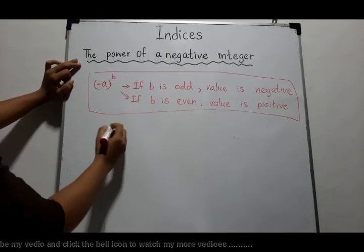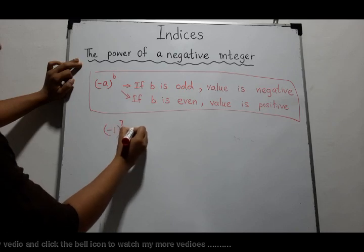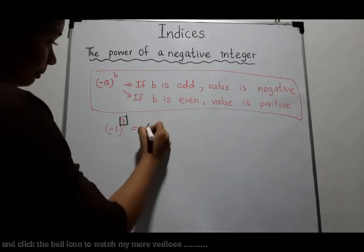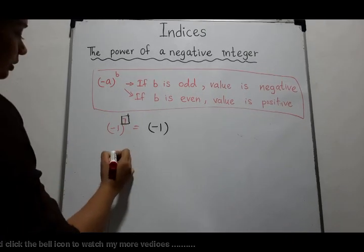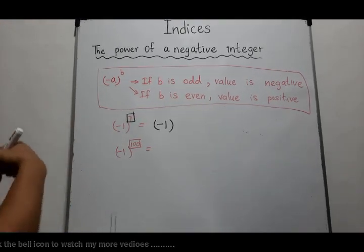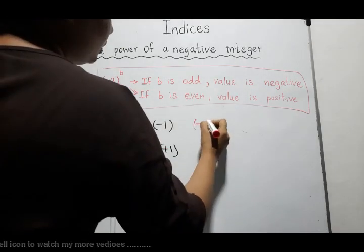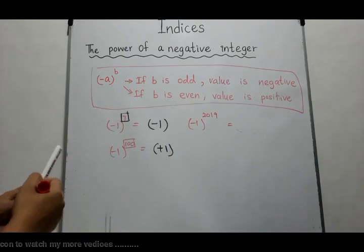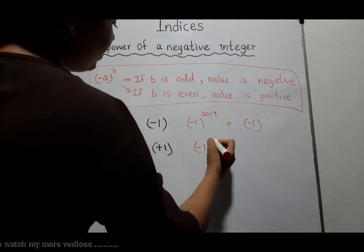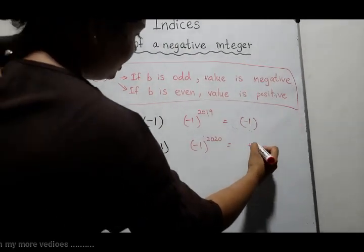Any power of 1 is 1. For (−1)⁷, the index is odd, so the answer must be negative: −1. For (−1)^100, the index is even, so the answer is positive 1, not negative 1. For (−1)^2020, 2020 is even, so the answer is positive 1.